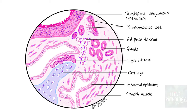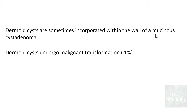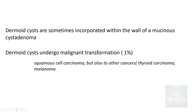In a given case of teratoma, histologically you find components of germ cell derivatives. Though these are germ cell tumours, they can also be incorporated with a surface epithelial tumour — for example, dermoid cysts are sometimes incorporated within the wall of mucinous cystadenomas. Very rarely, dermoid cysts can undergo malignant transformation — around 1% of cases — and the malignancy is usually squamous cell carcinoma, though other cancers like thyroid carcinomas and melanomas can also occur. The majority of cases are cystic, but very rarely they can be entirely solid.